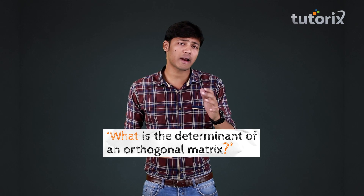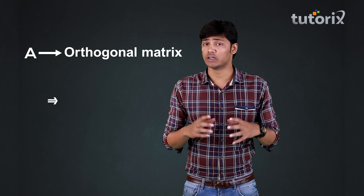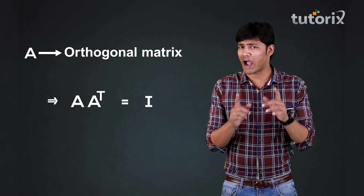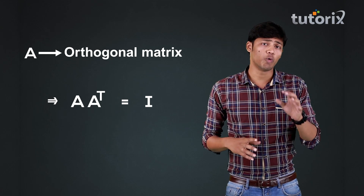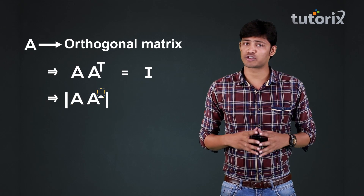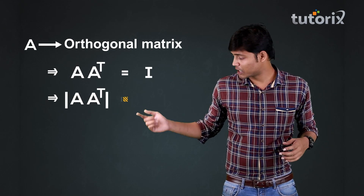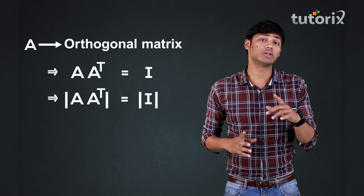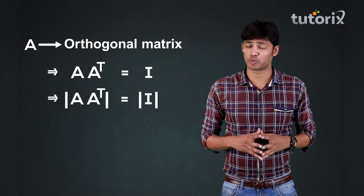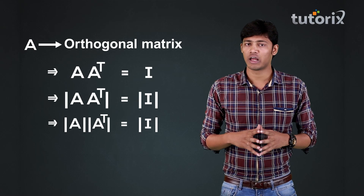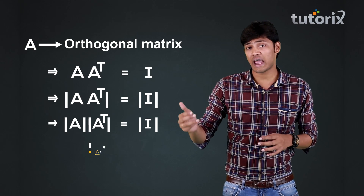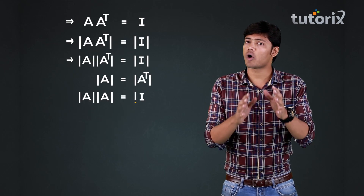Now, is it possible to find the determinant of an orthogonal matrix? Let's try to do it. If A is an orthogonal matrix, then we know that A into A transpose is equal to the identity matrix I. Now, applying the determinant on both sides of this equation, we get the determinant of A into A transpose is equal to the determinant of the identity matrix. We know that the determinant of A into A transpose is equal to the determinant of A multiplied by the determinant of A transpose. And we also know that determinant of A and determinant of A transpose are equal.